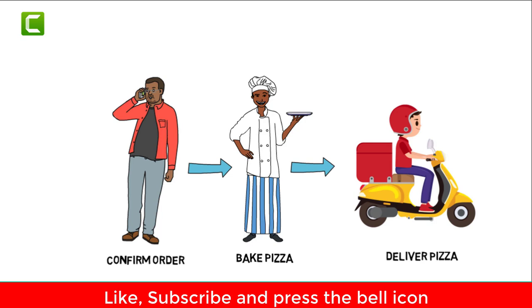Let's have another example: a pizza company. They have three kinds of people — a receptionist to confirm orders, a chef to bake pizza, and a delivery guy. It's a clean three-layered process with defined inputs and outputs. The receptionist confirms the order by call and passes it to the chef, who bakes the pizza and provides it to the delivery guy, who delivers it to the customer.